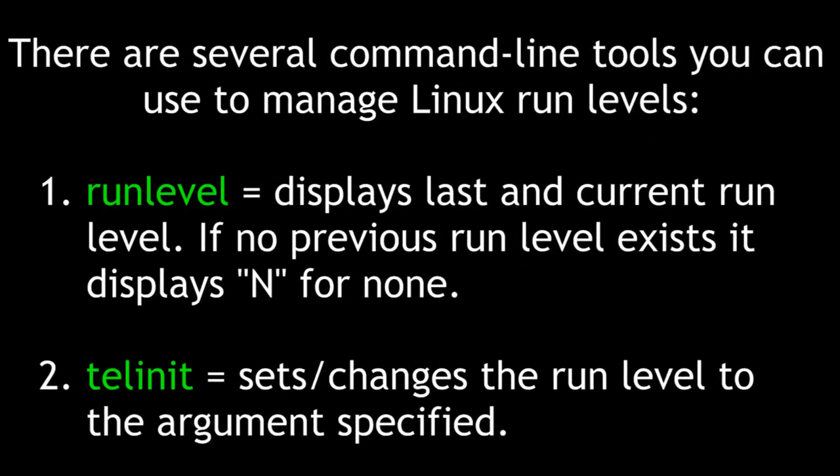There are several command line tools you can use to manage Linux run levels. The first, runlevel, displays the last and current run levels. If no previous run level exists, it displays N for none. The second, telinit, sets or changes the run level to the argument specified. Beyond these standard tools, there are also other tools for configuring startup options such as bum and sysv-rc-conf.